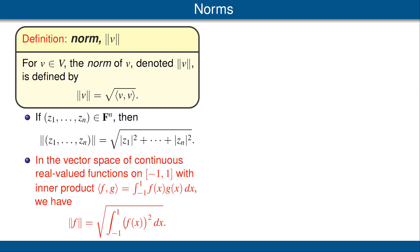If our vector space is the vector space of continuous real-valued functions on the closed interval [0, 1], with the inner product given by the integral of the product of the two functions, then the norm of a function f is the square root of the integral from minus 1 to 1 of f squared.